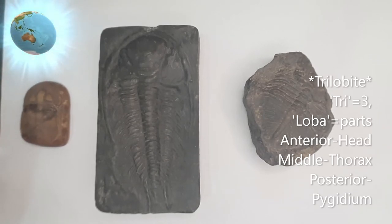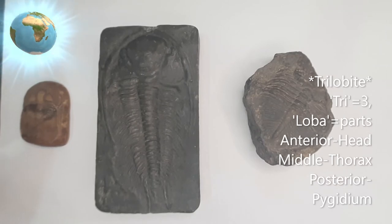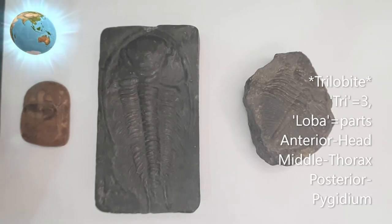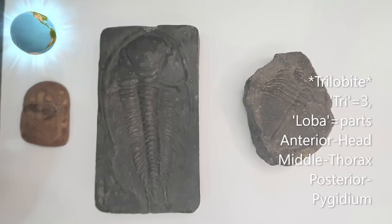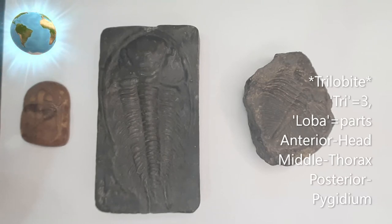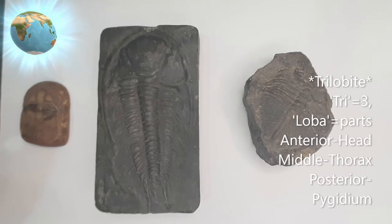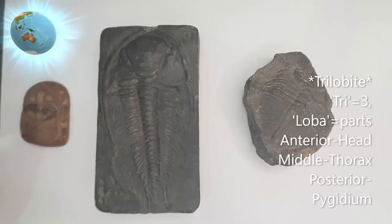To understand the meaning of Trilobite: Tri means three and Lobi means parts, so the body is divided into three parts — the anterior part (head), middle part (thorax), and posterior part called Pygidium. The term 'tail' cannot be used because these animals were primitive, so the word Pygidium is used for the posterior-most part of the body.